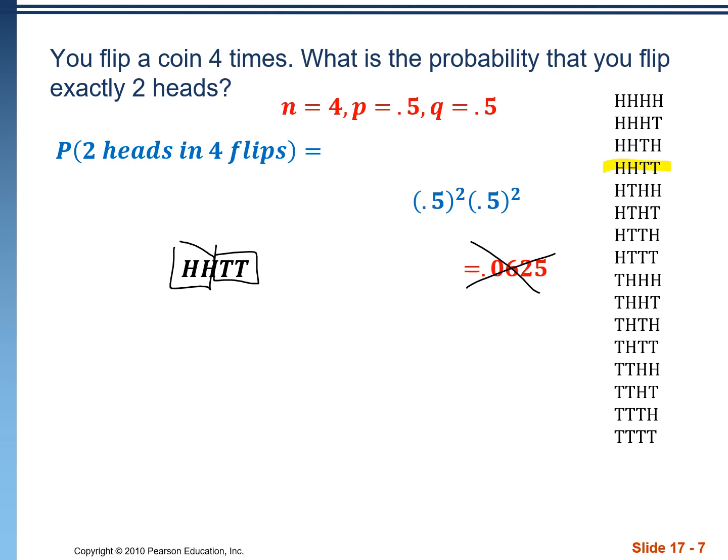But maybe instead of flipping heads, heads, tails, tails, we flip heads, tails, heads, tails. Or heads, tails, tails, heads. Or this one. This one or this one. So actually six of these all have that outcome.